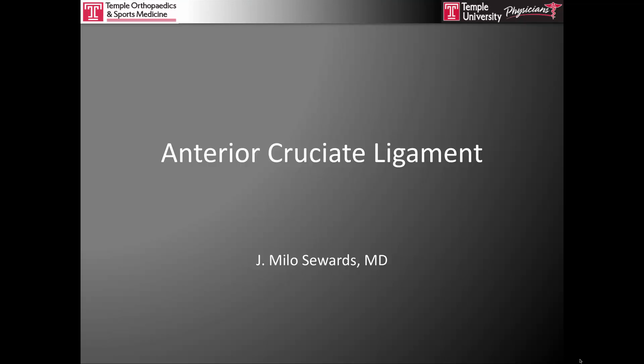This is a brief introduction to the anterior cruciate ligament. There is certainly a significant amount written about it — a PubMed search will provide 17,000 results of articles written over the last roughly 40 years, with the vast majority written in the last 10 years. This overview will be a brief review of the anatomy of the knee, the anatomy of the anterior cruciate ligament, considerations for reconstruction, and rehabilitation.